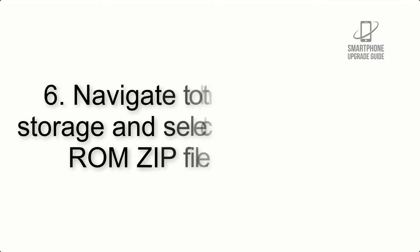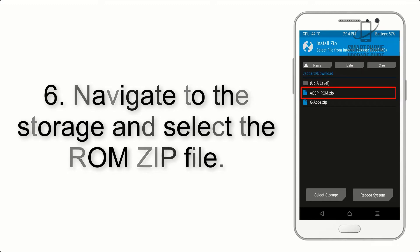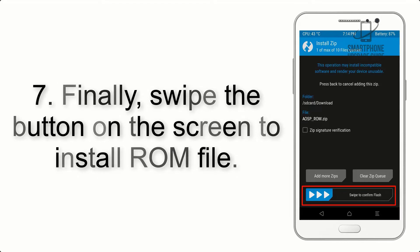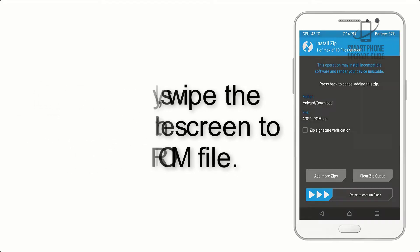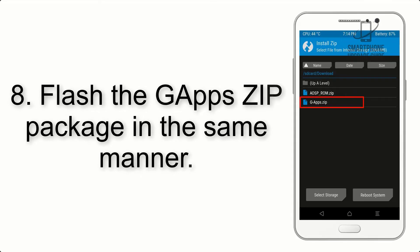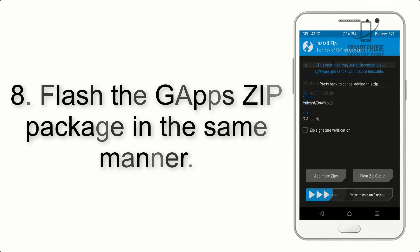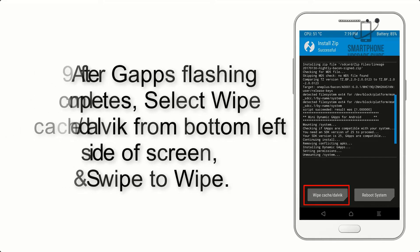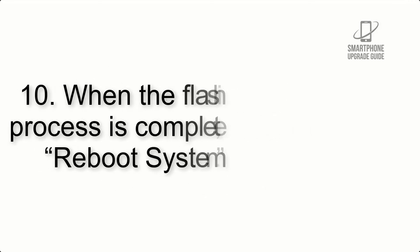Step 5: Go back to the recovery main screen and tap on the Install button. Step 6: Navigate to the storage and select the ROM zip file. Step 7: Swipe the button on the screen to install the ROM file. Step 8: Flash the GApps zip package in the same manner.